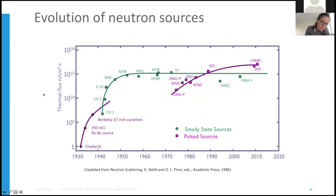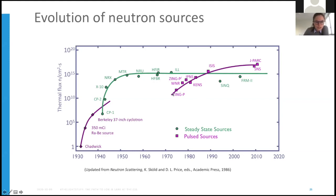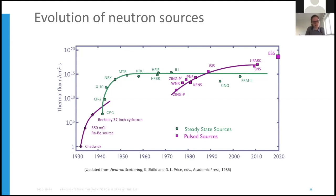Looking at the evolution of neutron sources: on a logarithmic thermal flux scale, starting with Chadwick's single neutron in 1932, steady-state reactor sources developed from the early 1940s, reaching a maximum at the ILL in the early 1970s. Then pulsed spallation sources began, rapidly increasing in power and reaching a peak at ISIS in the UK in the late 1980s, then a maximum again at J-PARC in Japan in 2010 at around 10^17 neutrons per cm² per second. ESS is expected to beat that by at least tenfold.